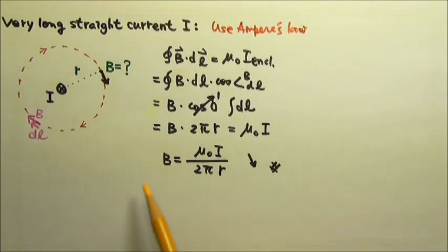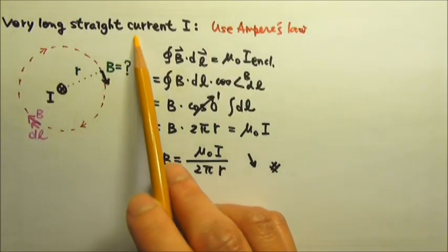So we get the strength of the magnetic field to be proportional to the current, which makes sense. And B is proportional to 1 over r, which also makes sense for a very long straight current.